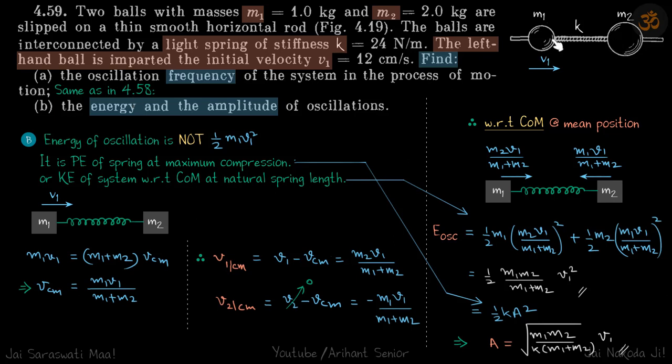Just like the previous problem, we have two masses connected with a spring, so frequency of the system will be just like what we calculated in the previous problem. So let's find energy and amplitude of oscillations when initially m1 is given a velocity v1.